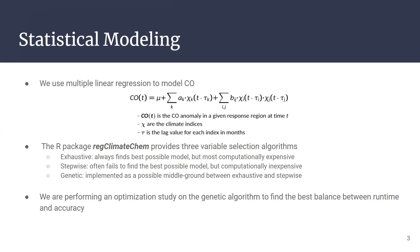Stepwise regression often fails to find the best possible model but is computationally inexpensive. The genetic algorithm is implemented as a possible middle ground between exhaustive and stepwise. We are performing an optimization study on the genetic algorithm to find the best balance between runtime and accuracy.